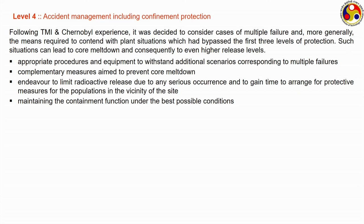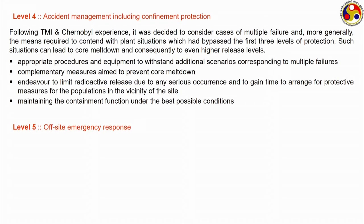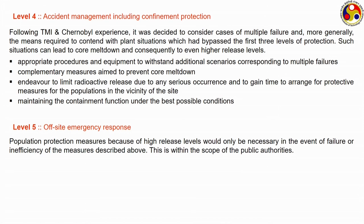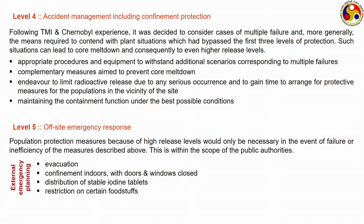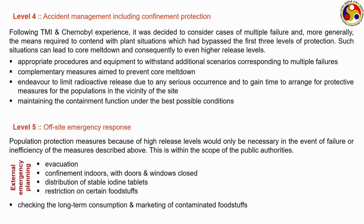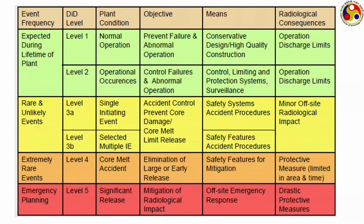The fifth level refers to off-site emergency response when all four levels have failed and radioactivity has started to go outside the reaction zone. Public authorities can help through evacuation of the local site, confinement indoors with doors and windows closed, distribution of stable iodine tablets, and restrictions on consumption and sale of contaminated foodstuffs. These four factors — evacuation, confinement, distribution of iodine tablets, and restrictions — are together known as external emergency planning.